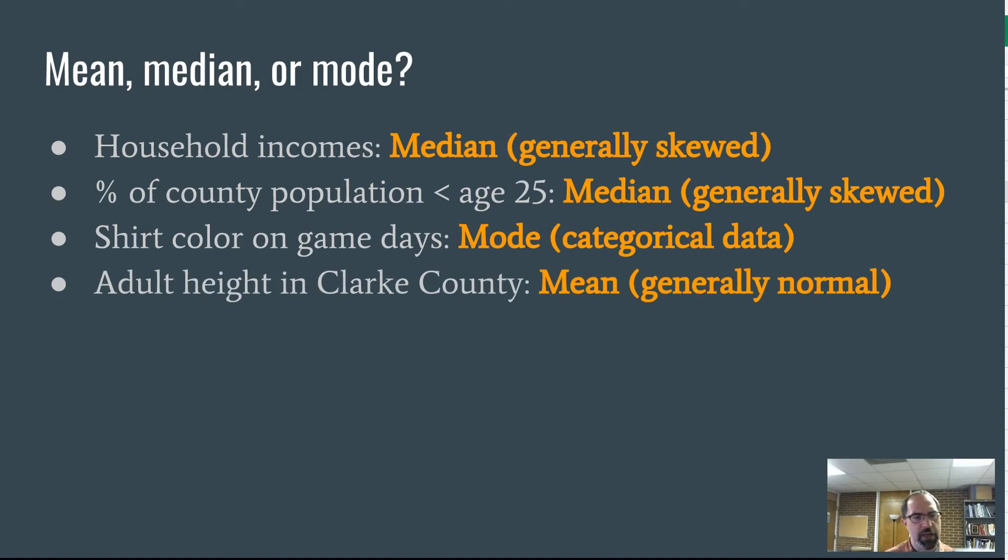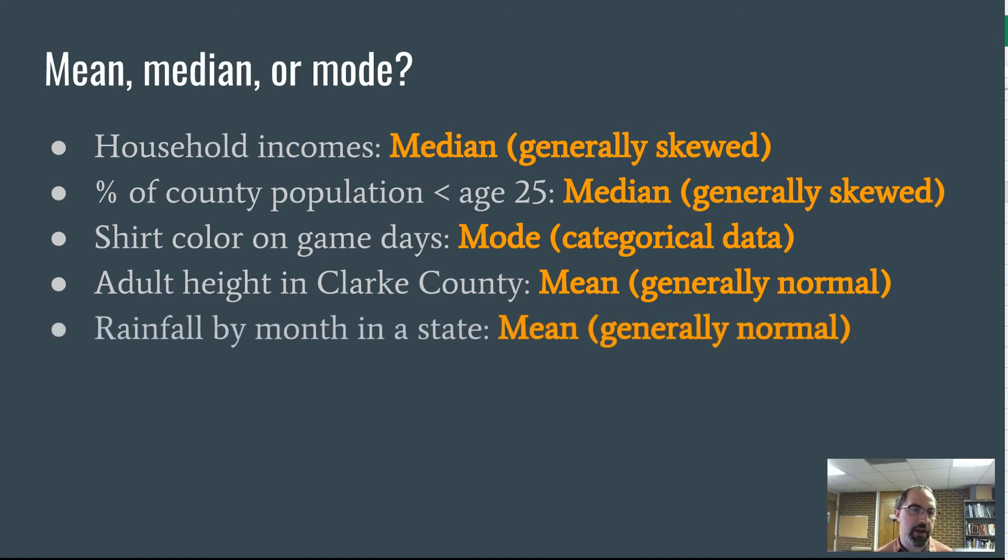Adult height in Clark County, we would use mean. I would think that is a variable that there would be outliers potentially on both sides. Maybe a little positively skewed. You'd maybe have a few more people that are close to seven foot than you would people under five foot. But generally, I'd think of that as a fairly symmetrical or normal distribution. And then rainfall by month in a state, again, I would think of that as being more or less fairly random around a central point.